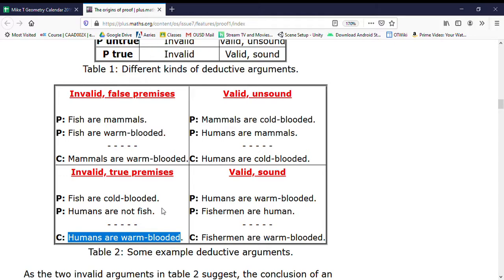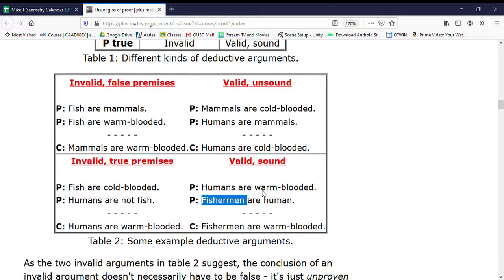And then finally, humans are warm-blooded, fishermen are human, therefore fishermen are warm-blooded. Both those premises are true, and then the conclusion is a logical conclusion that follows. And so I like that idea because it shows how you can go wrong. You can start with bad information and make bad deductions. You can start with true information but still make bad deductions. You can start with false information that leads you to what is logically sound but is actually incorrect. And then finally, if we start with good stuff and we use good deductive logic, we end up with a valid and sound argument.